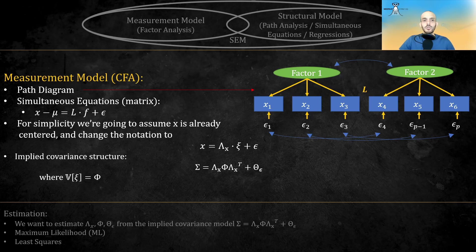The correlation between variables are presented in double-head arrows. The simultaneous equations in matrix form will be written like this. For simplicity, we're going to assume X is already centered, and change the notation to X equal lambda X times C plus epsilon. So C instead of F, and lambda subscript X instead of L. The implied covariance structure is the following, where phi is the covariance matrix of latent variables.